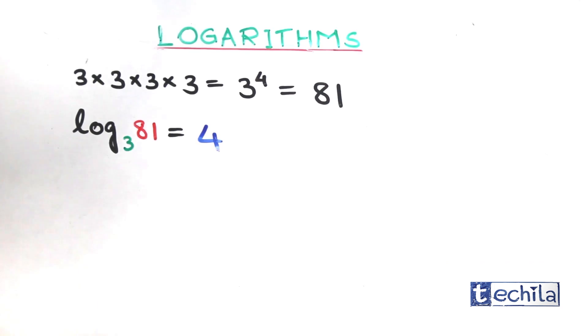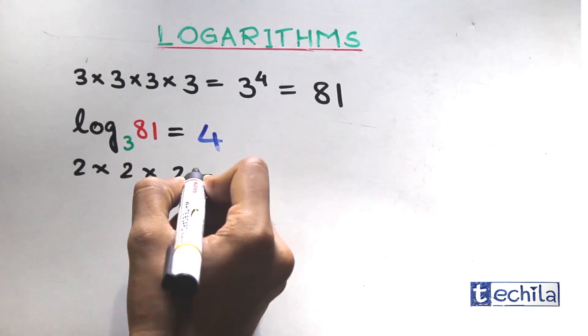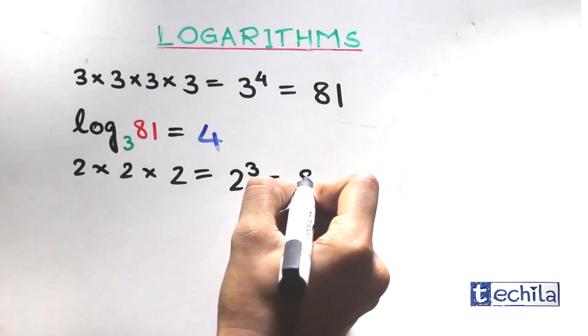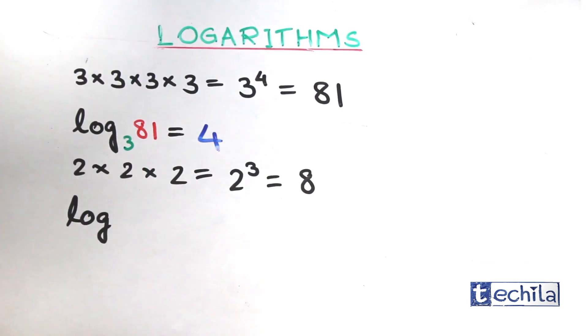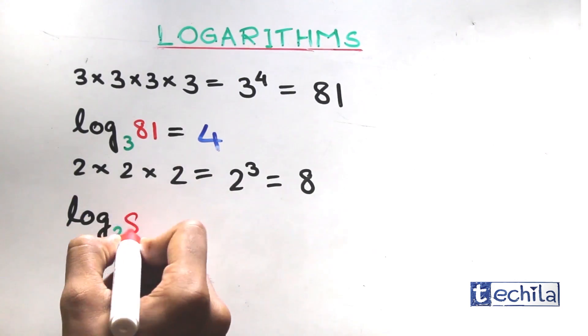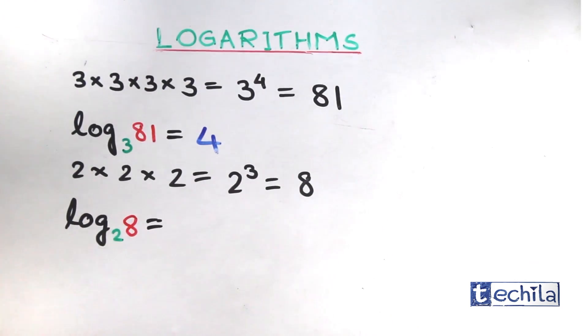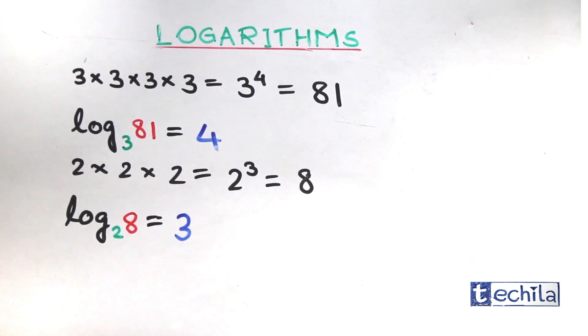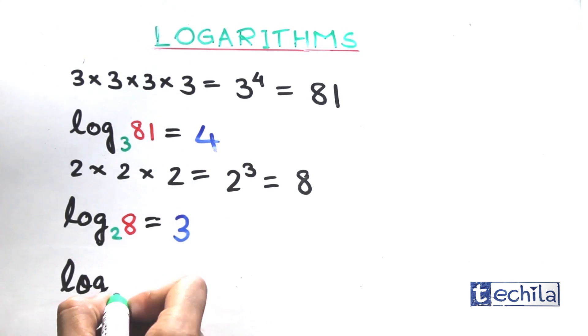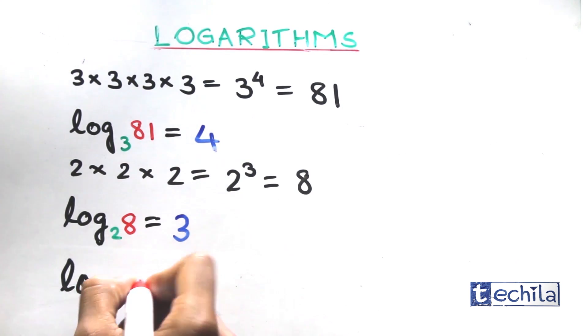Now let us consider one more example: 2 into 2 into 2 is equal to 2 raised to 3, that is 8, which can be written as log to the base 2 of 8 equals 3. So we can say that logarithm gives us the power to which its base must be raised to get the desired number.